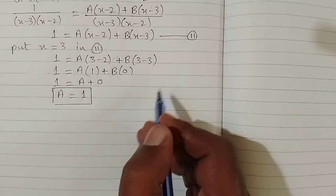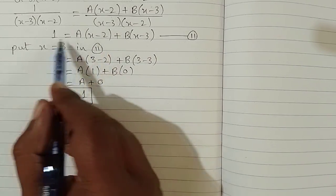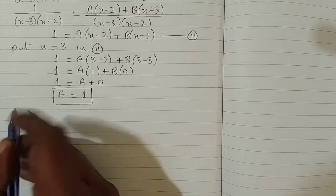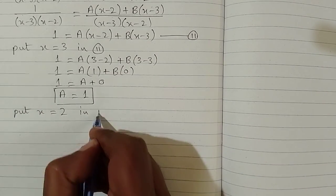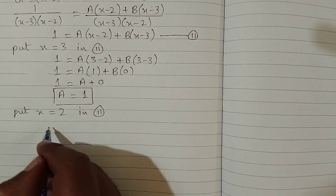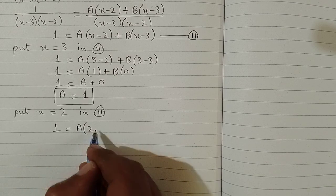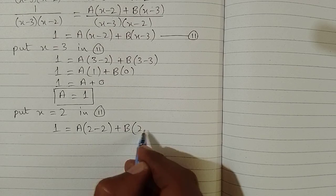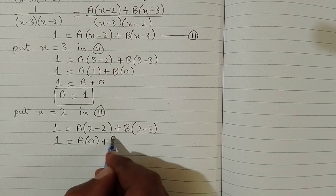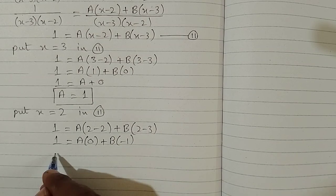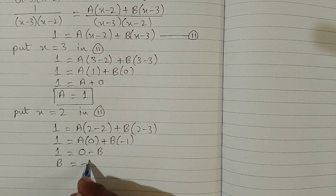Now we will find the value of B. We put x equal to 2 in the second identity so that the A term becomes 0. So we have 1 is equal to A times 0 plus B times (2 minus 3), which is minus 1. So we have 1 is equal to negative B, and therefore B is equal to minus 1.